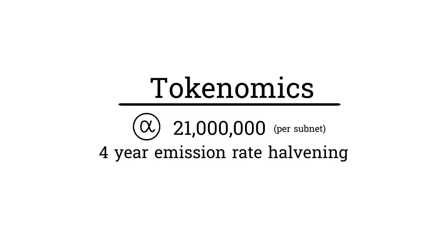Just like Tau, each subnet's alpha tokens have a limited supply of 21 million. Each subnet has their own four-year emission halvening schedule, starting when the subnet was created, with the exception of the original 64 subnets.